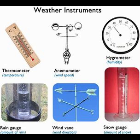Rain gauges collect and measure precipitation, and pyranometers measure solar radiation. Advanced tools like radiosondes, carried by weather balloons, measure temperature, pressure, and humidity at various altitudes.